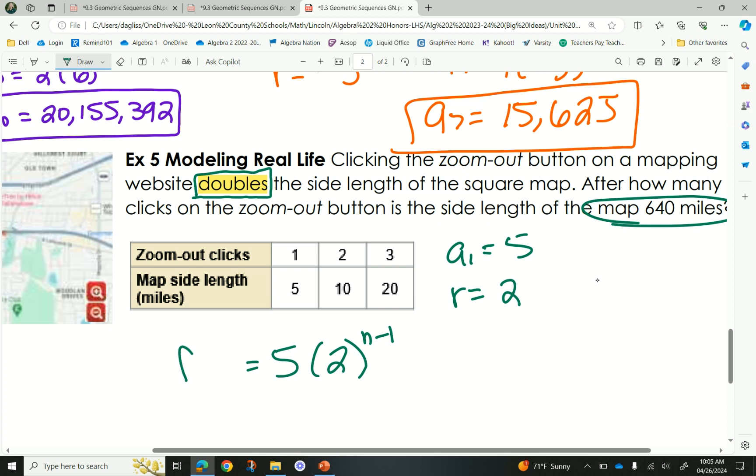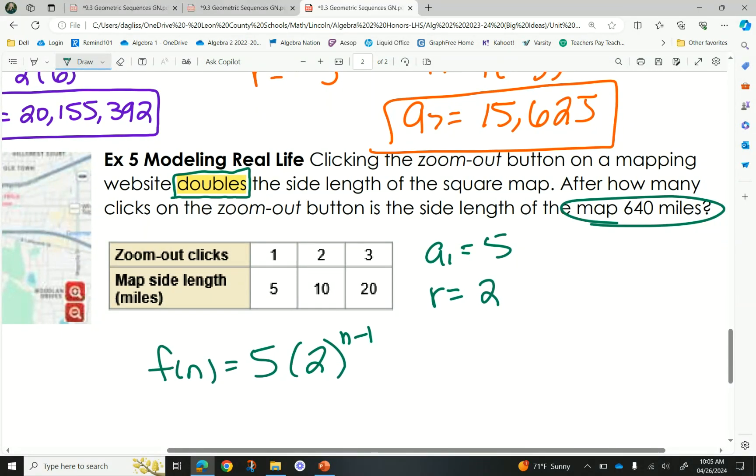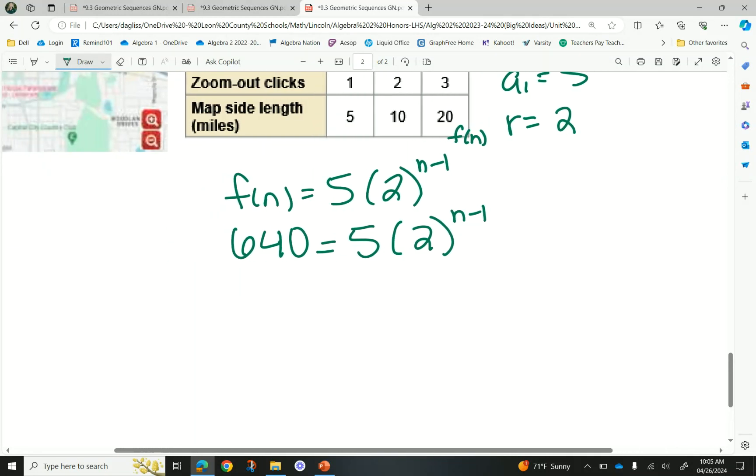Algebra. We're going to use our function notation this time. So this time, a sub n, it is the same. If you wrote it, you're not wrong. But usually, real-world stuff, we use function notation. Okay. Now it's time to answer the question. It wants to know how many clicks it takes to get 640 miles on the edges. So is that representing my f of n, or is that representing just the n? The f of n. Good. My clicks are n, right? Our miles are f of n. So this is representing our total outcome. And we don't know how many clicks it took to get there. All right. So we're going to solve for n.